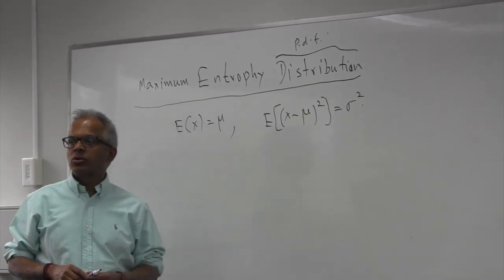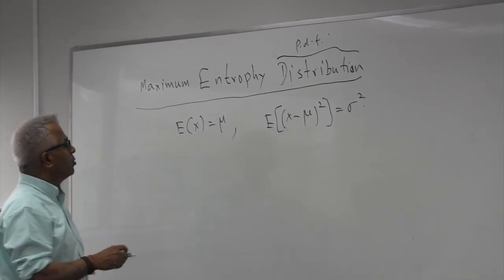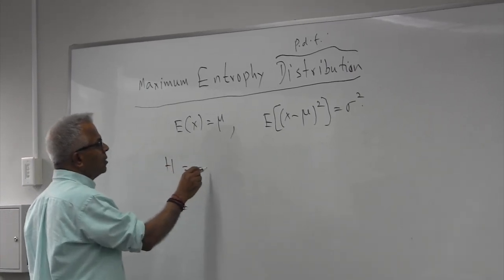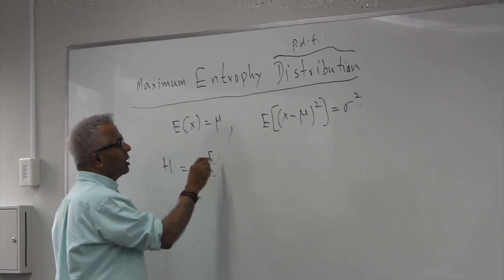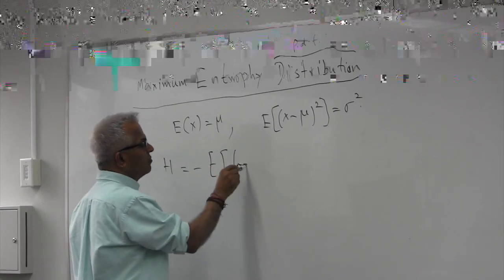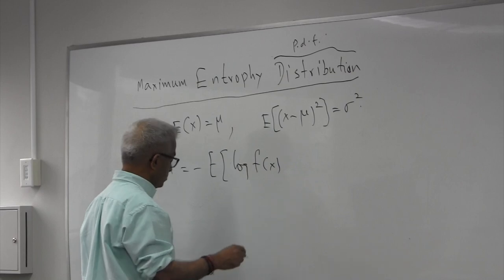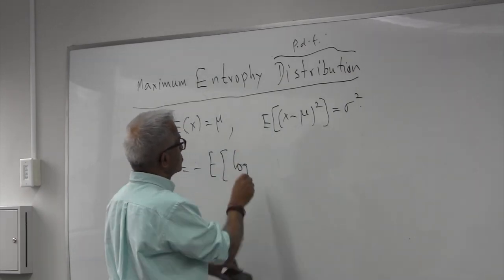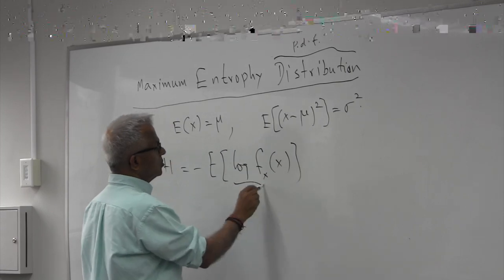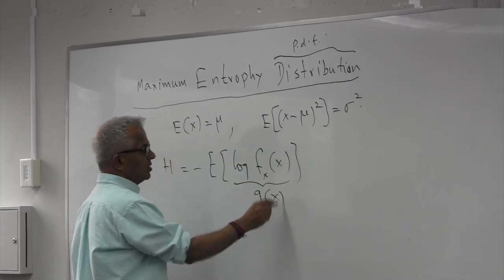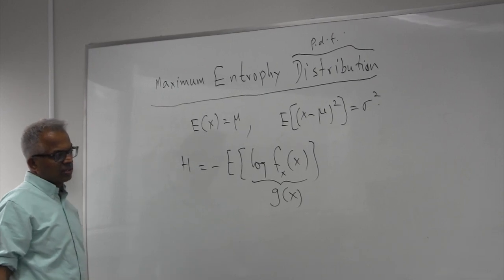I don't know whether you recall this. I gave you the definition of entropy as minus expected value of log of fx. This is g of, this is a function of x and minus of this is gx.